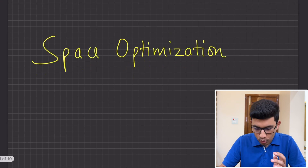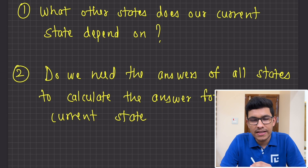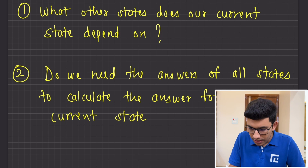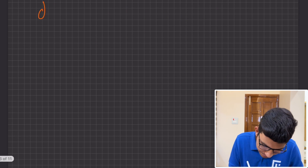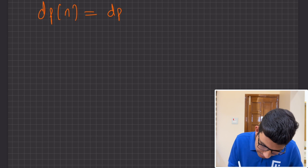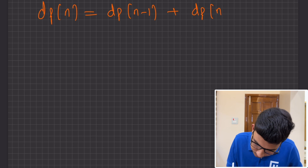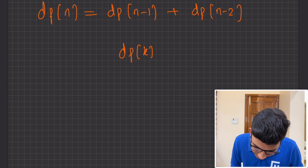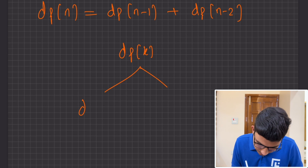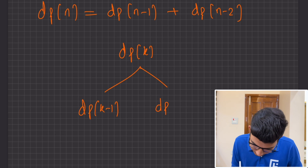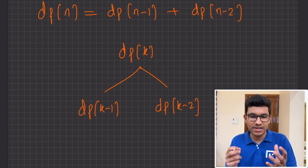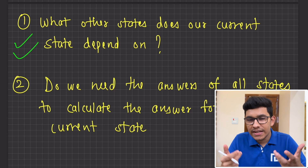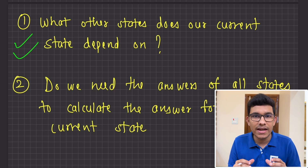In order to understand space optimization, there are two questions you must ask yourself. First, when you are evaluating the answer of your current state, what are the other states on which it is dependent? Second, do you really need the answer of every single state to get the answer for your current state?